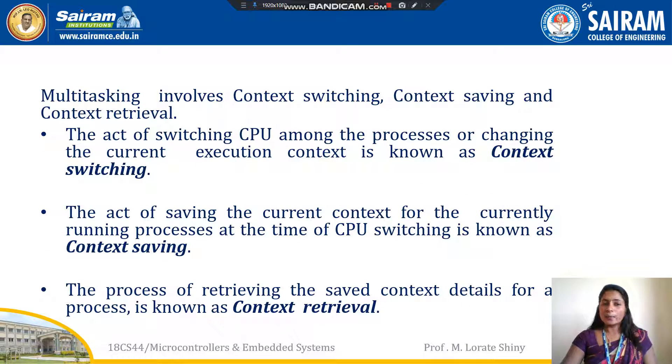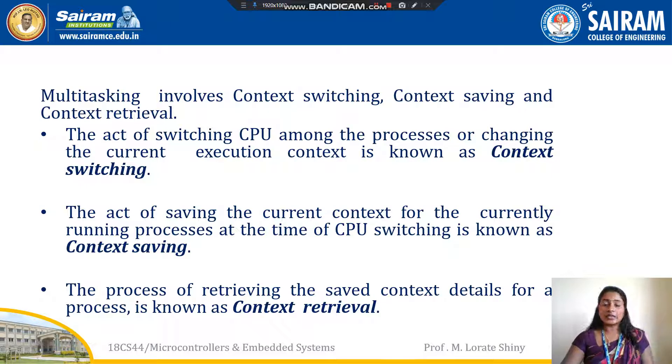Next, multiprocessing involves three things: context switching, context saving, and context retrieval.